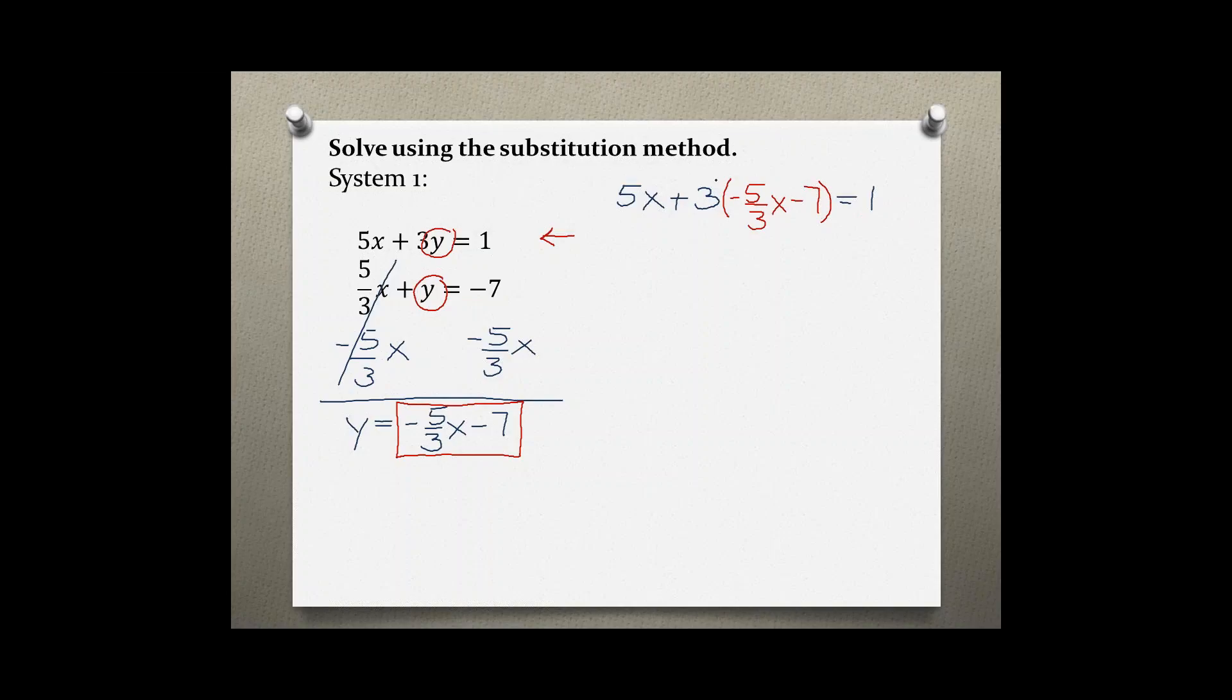In the next step, we should get rid of these parentheses by using the distributive property. Even though there is a fraction involved, it's going to be an easy step to eliminate this fraction. We can put the 3 as a fraction by putting it over 1, and then use distributive property. So 5x plus, and now when you're multiplying fractions you can use cross-canceling, so the 3 on top and the 3 on the bottom cancel out and you are left with negative 5x. Then 3 times negative 7 gives me negative 21 equals 1.